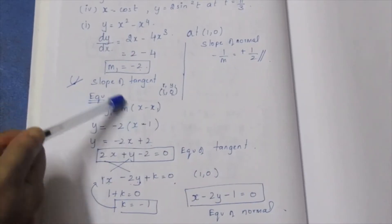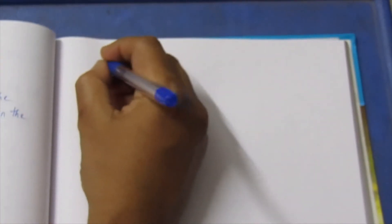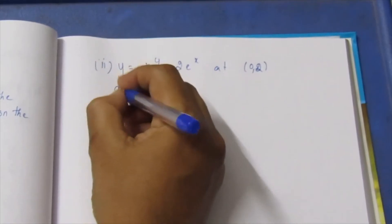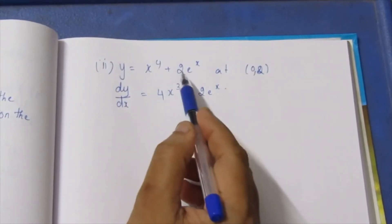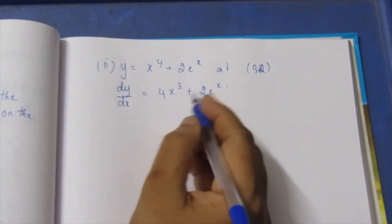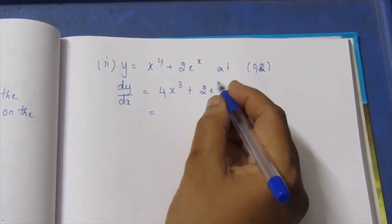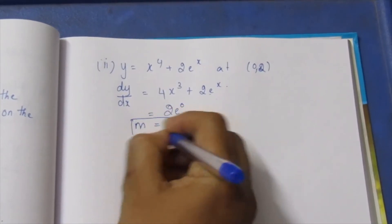That cross-multiplication method is an easy approach. Now second subdivision: y equals x⁴ plus 2eˣ at point (0, 2). The first step is to find the slope — dy by dx equals 4x³ plus 2eˣ. At x equals 0: dy by dx equals 0 plus 2e⁰ equals 2 into 1, so the slope equals 2.